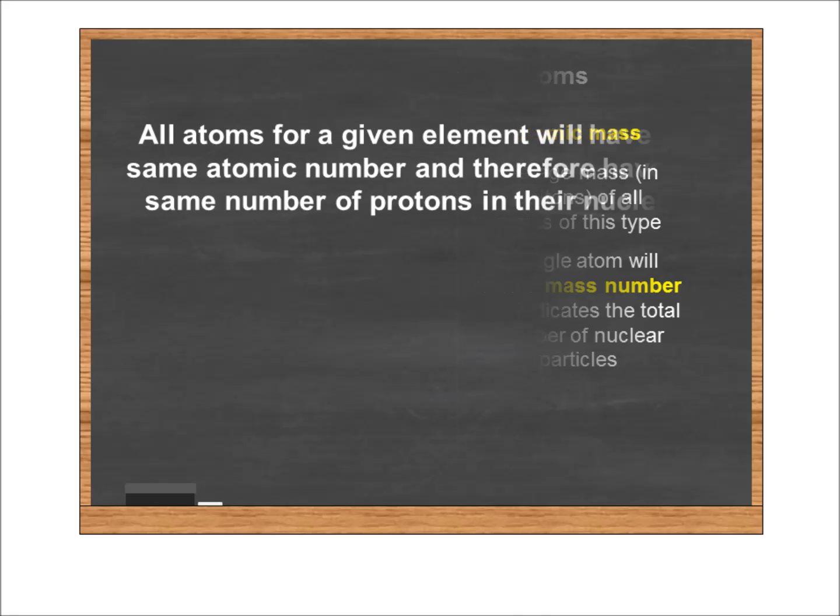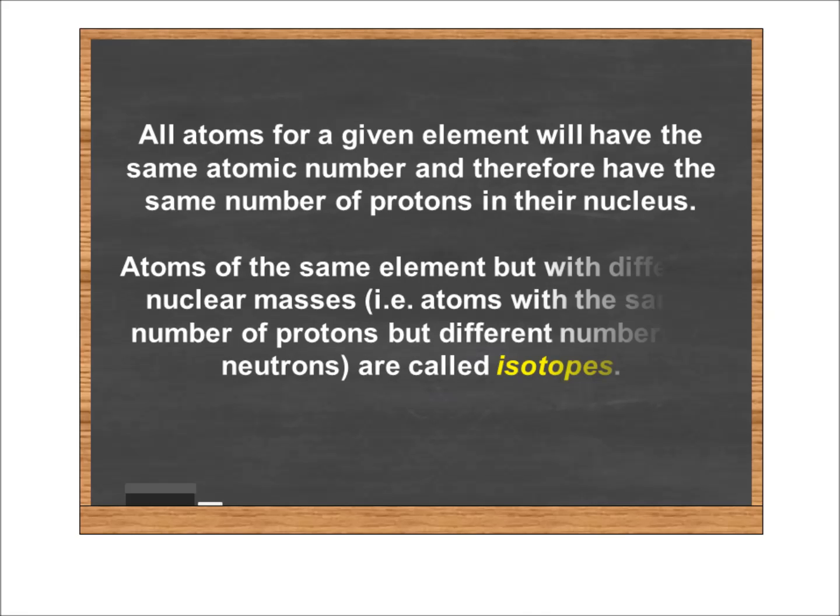So all atoms for a given element have the same atomic number, and therefore have the same number of protons in their nucleus, but different atoms of the same element have different mass numbers. These different atoms with different nuclear masses are called isotopes. That's a term you'll see a few places.